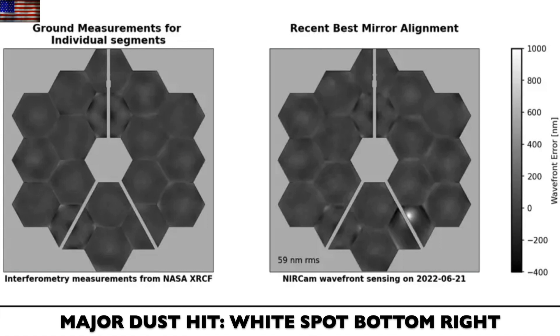NASA has released the selfie cam images of the James Webb mirrors and shows exactly where the big dust hit occurred. The only bright white spot, bottom right. Webb is taking more dust and larger dust than was originally expected, leading us to wonder how long it will last and how much of that extra dust is the dust coming with the galactic current sheet.